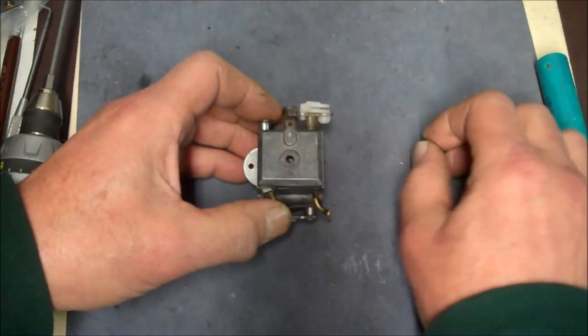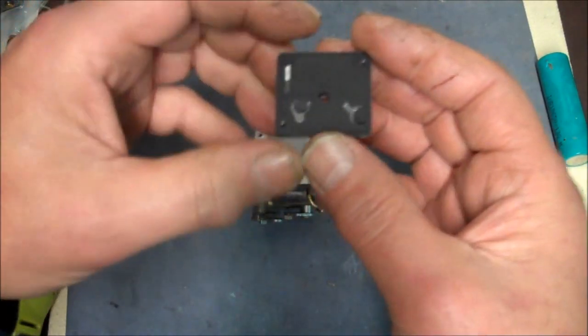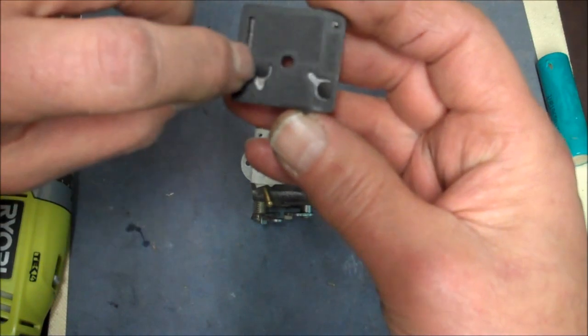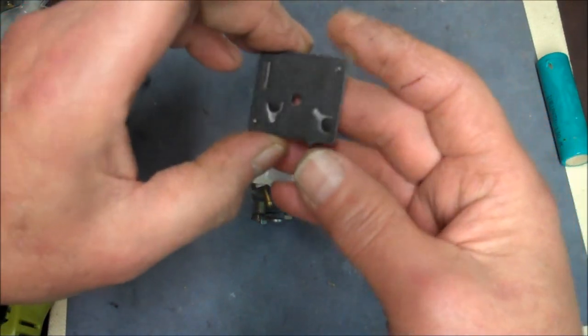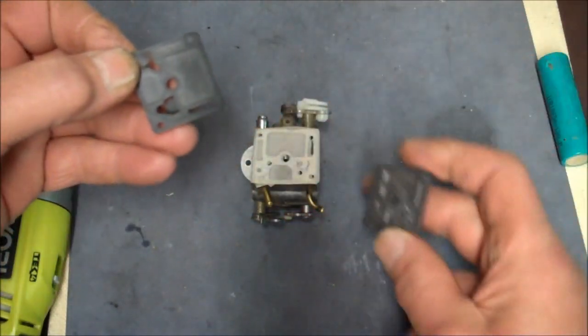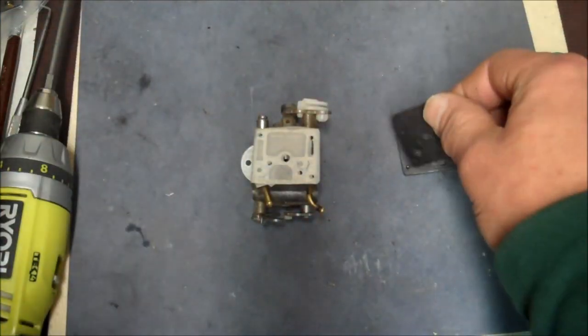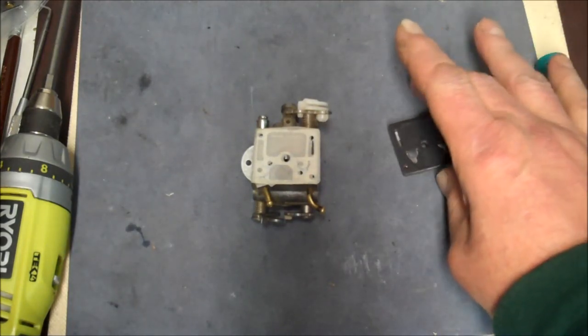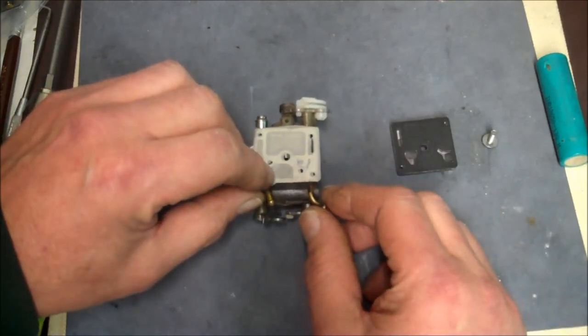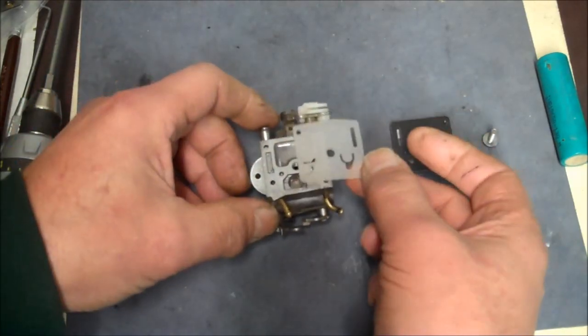So first we take out the top center screw, and the top plate comes off. And this is a diaphragm. This isn't just a rubber gasket because it has these two flaps here, here and here. So you'll be replacing that with your new kit. So we see that we got the screw, top cover plate, diaphragm.